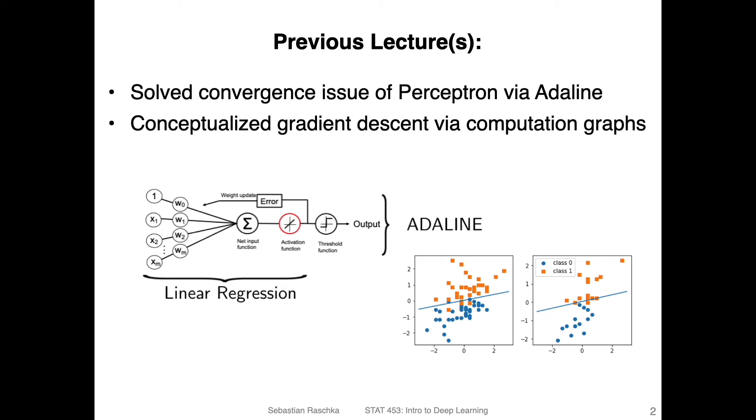Let's briefly recap what we've done in the previous lectures. One thing we did was implementing the perceptron. It had convergence issues if the classes were not linearly separable. But we solved that convergence issue by using Adeline, which was based on a mean squared error loss function and gradient descent. And then last week, we conceptualized gradient descent using computation graphs. So if you recall, that is how Adeline looked like.